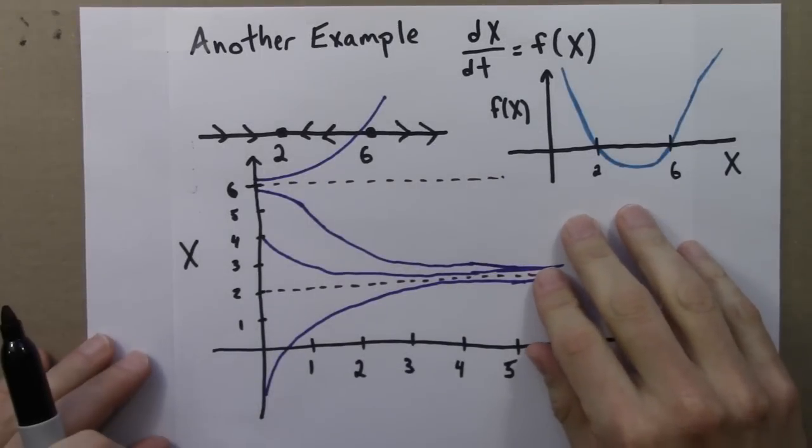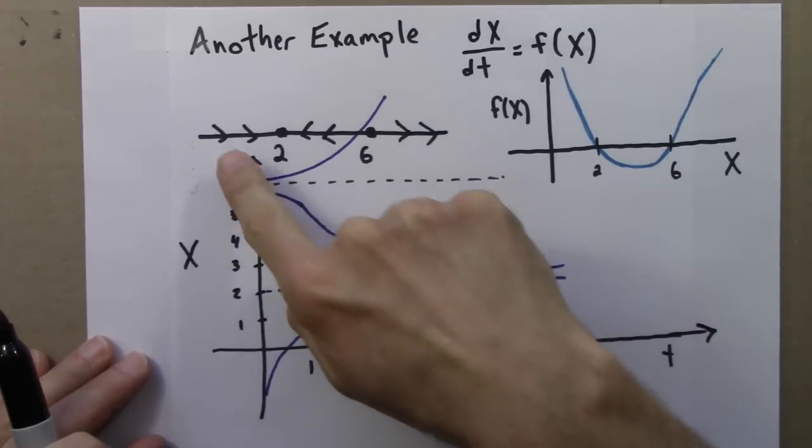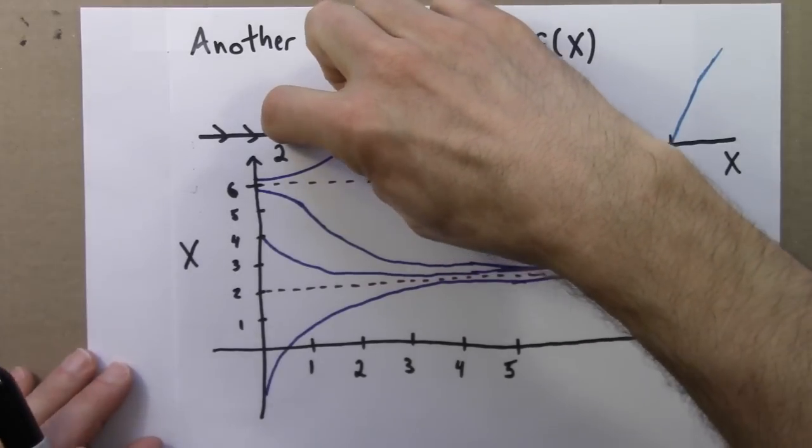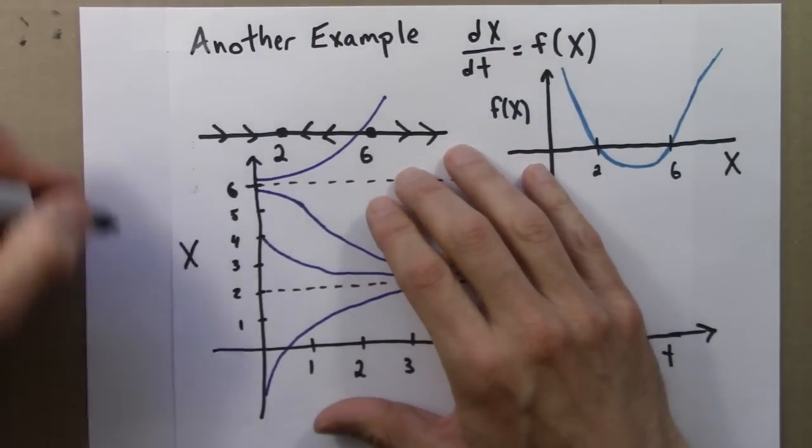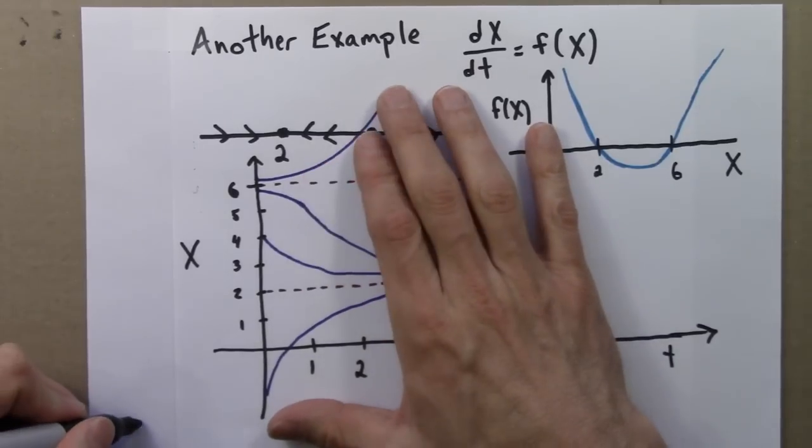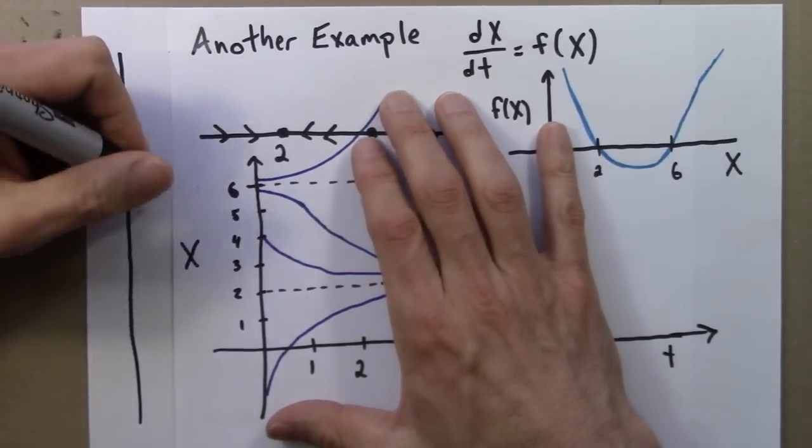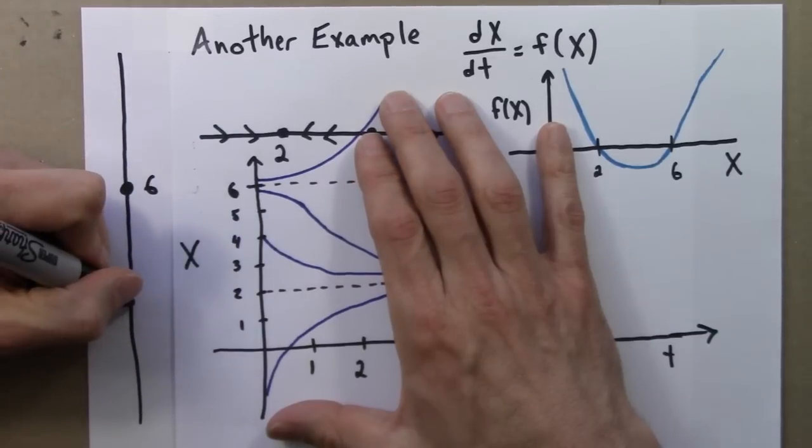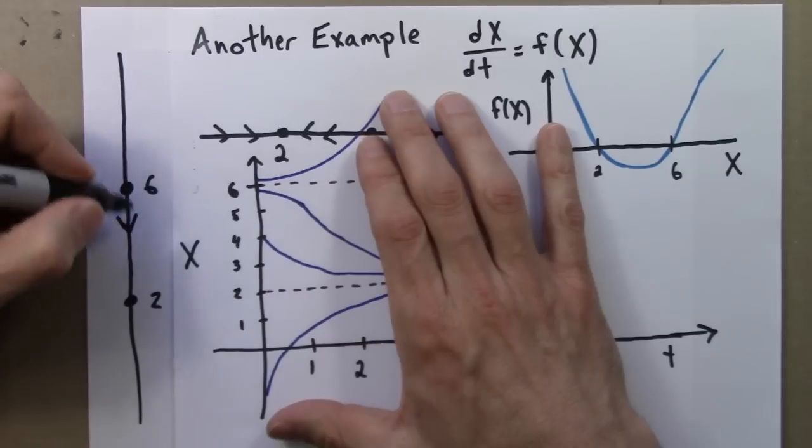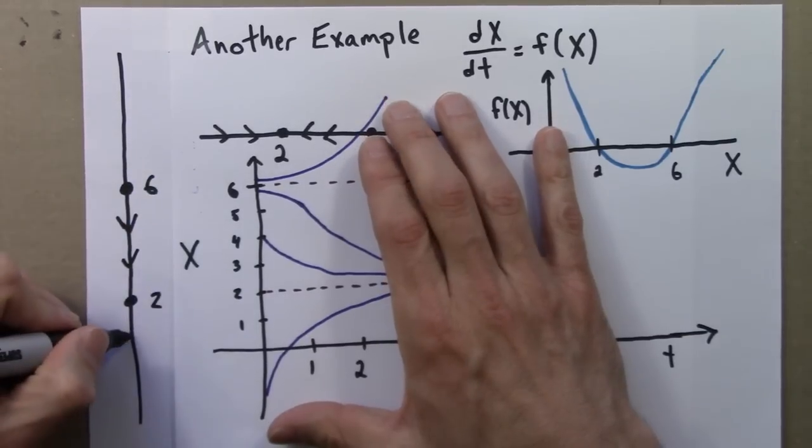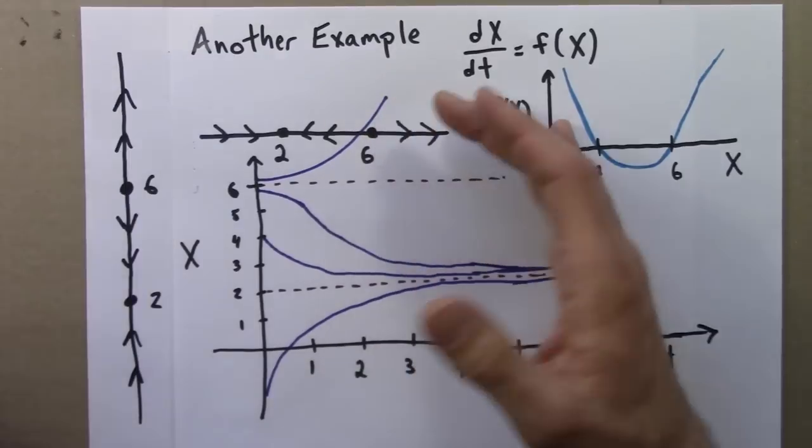Let me do one more thing to illustrate the relationship between these purple curves, the solutions, and the phase line. I'm going to take the phase line and turn it on its side, so it's pointing up instead of sideways. The phase line has a fixed point at 6, fixed point at 2. Points between 6 and 2 go to 2, below 2 go up to 2, and here they go away.